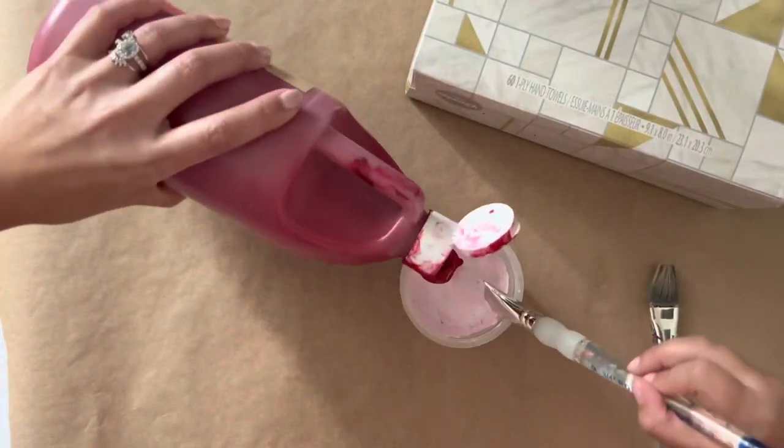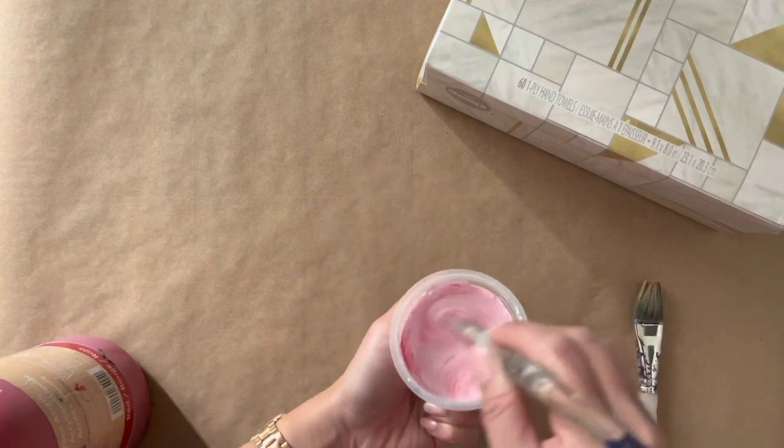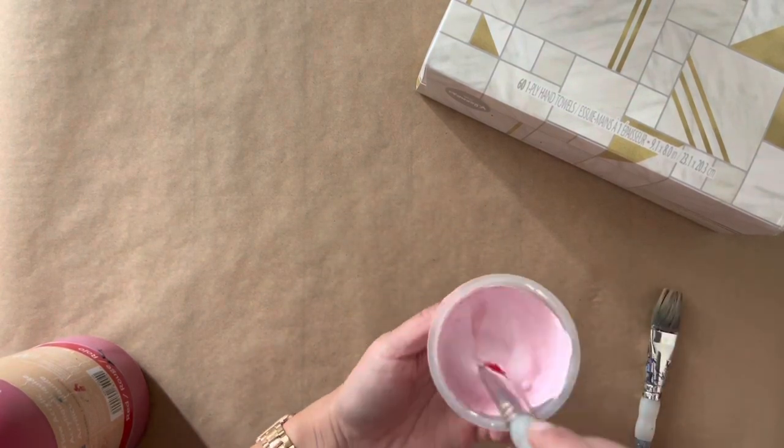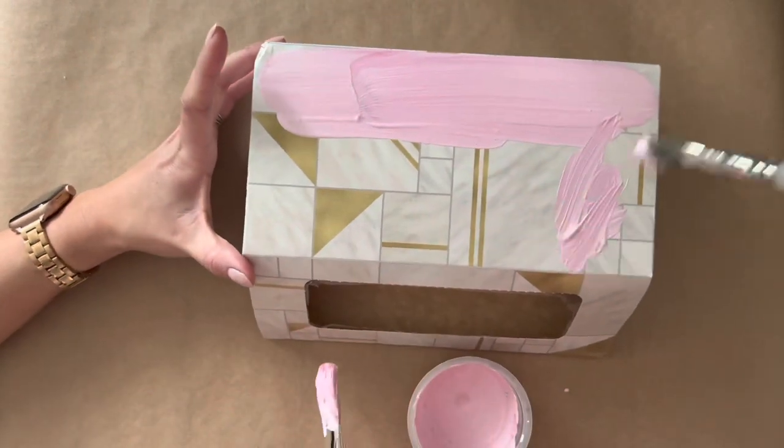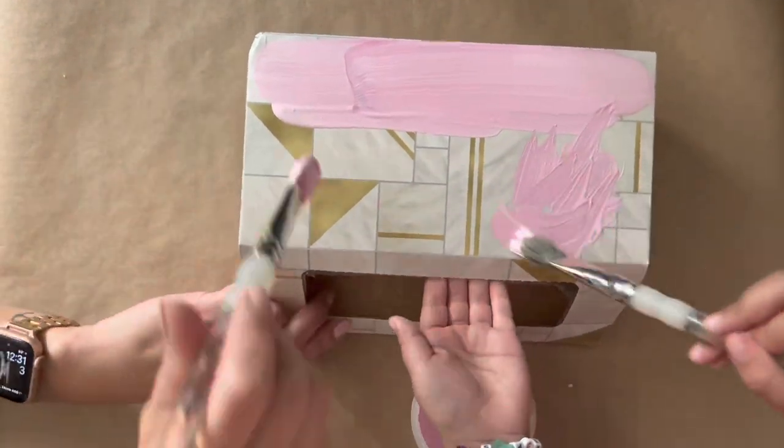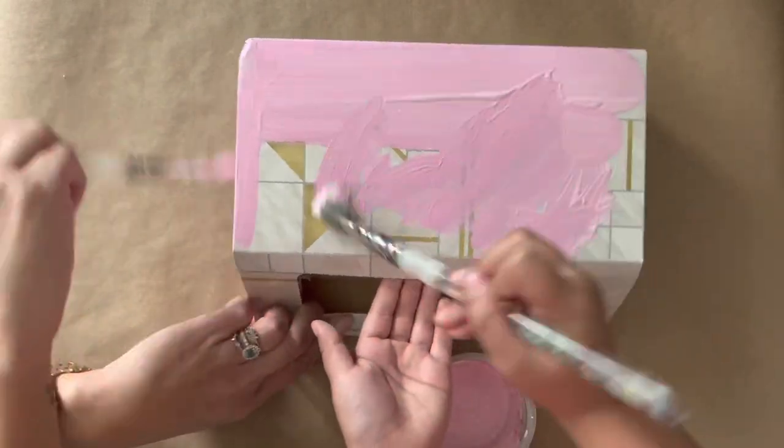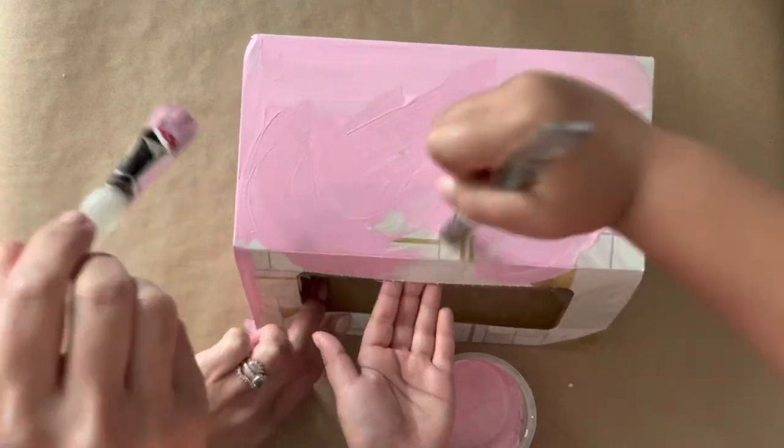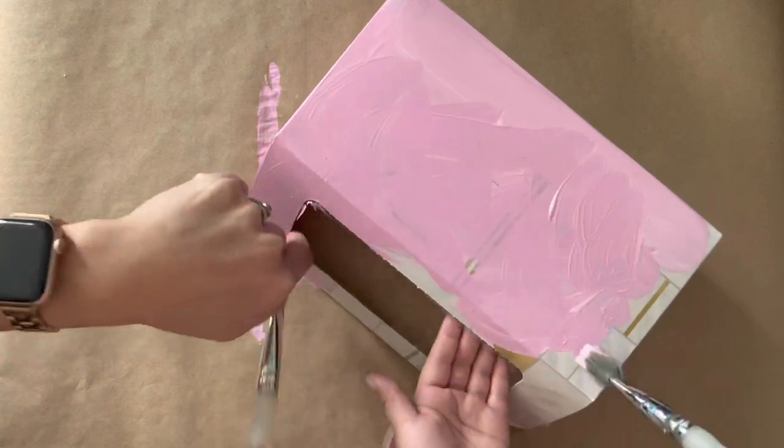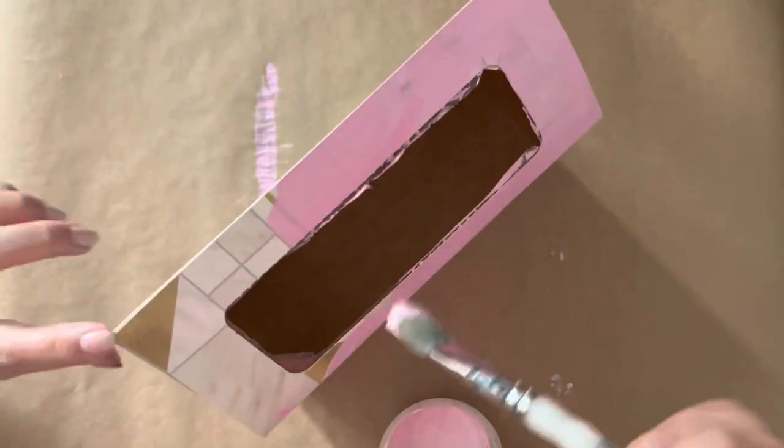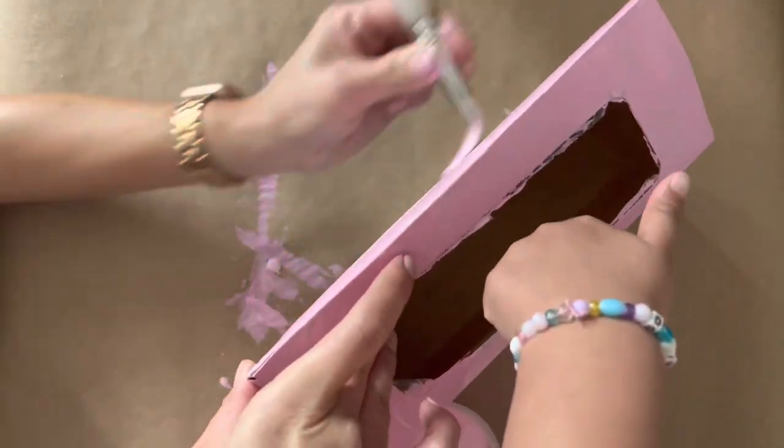The next step is to paint your container. My daughter wanted a pink color, so we're mixing white and red. After we painted the entire box, we let it dry and painted a second coat.